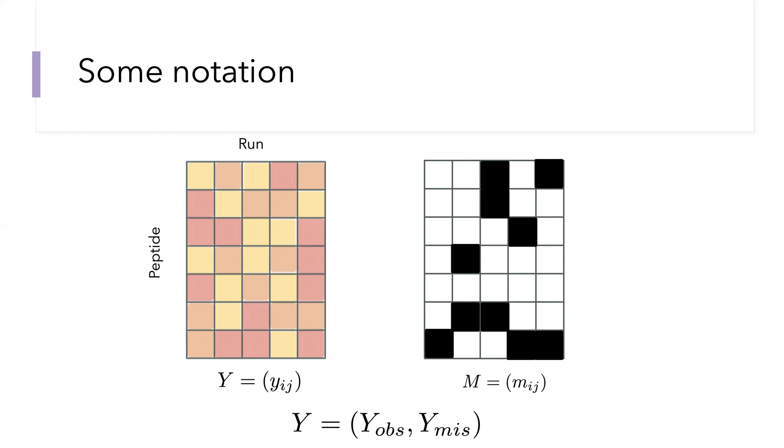In actuality, we don't observe every intensity. We only observe some of them. Part of the data we have is which peptides we measure or don't measure. So we'll think of M as a matrix of indicator variables which tell us which peptides are observed and which ones are not observed. The squares in white will be peptides that were observed, and the squares in black are the ones that are missing.